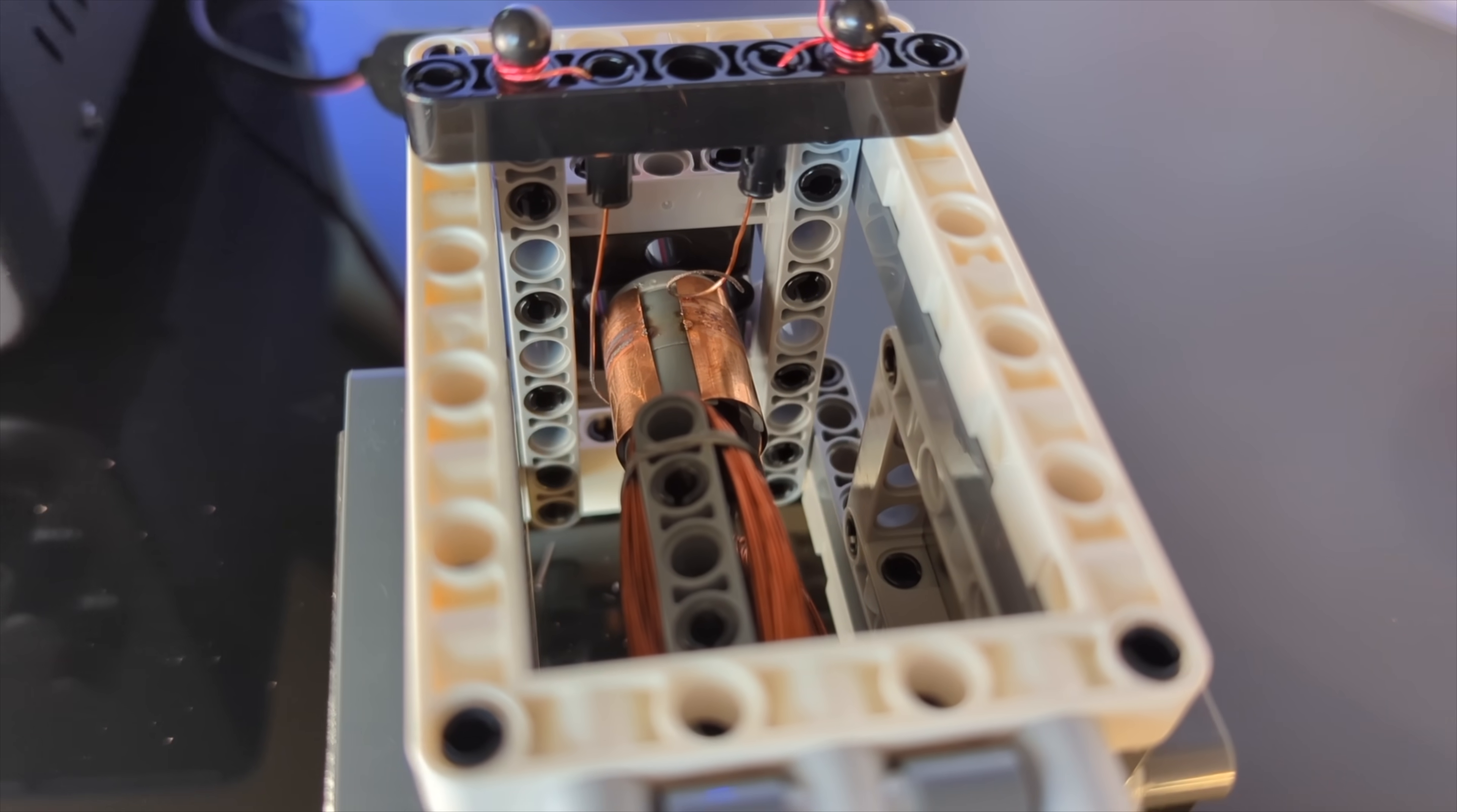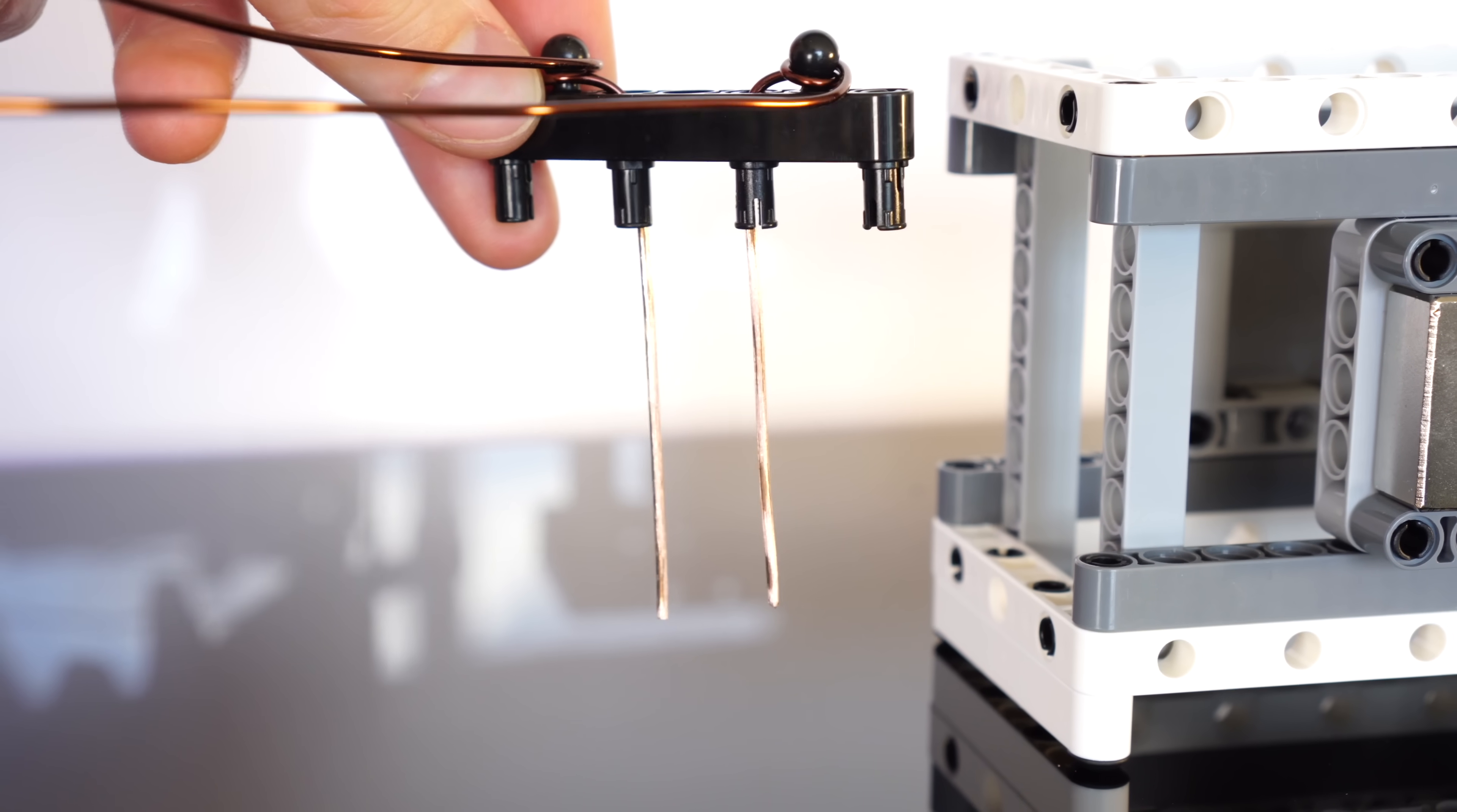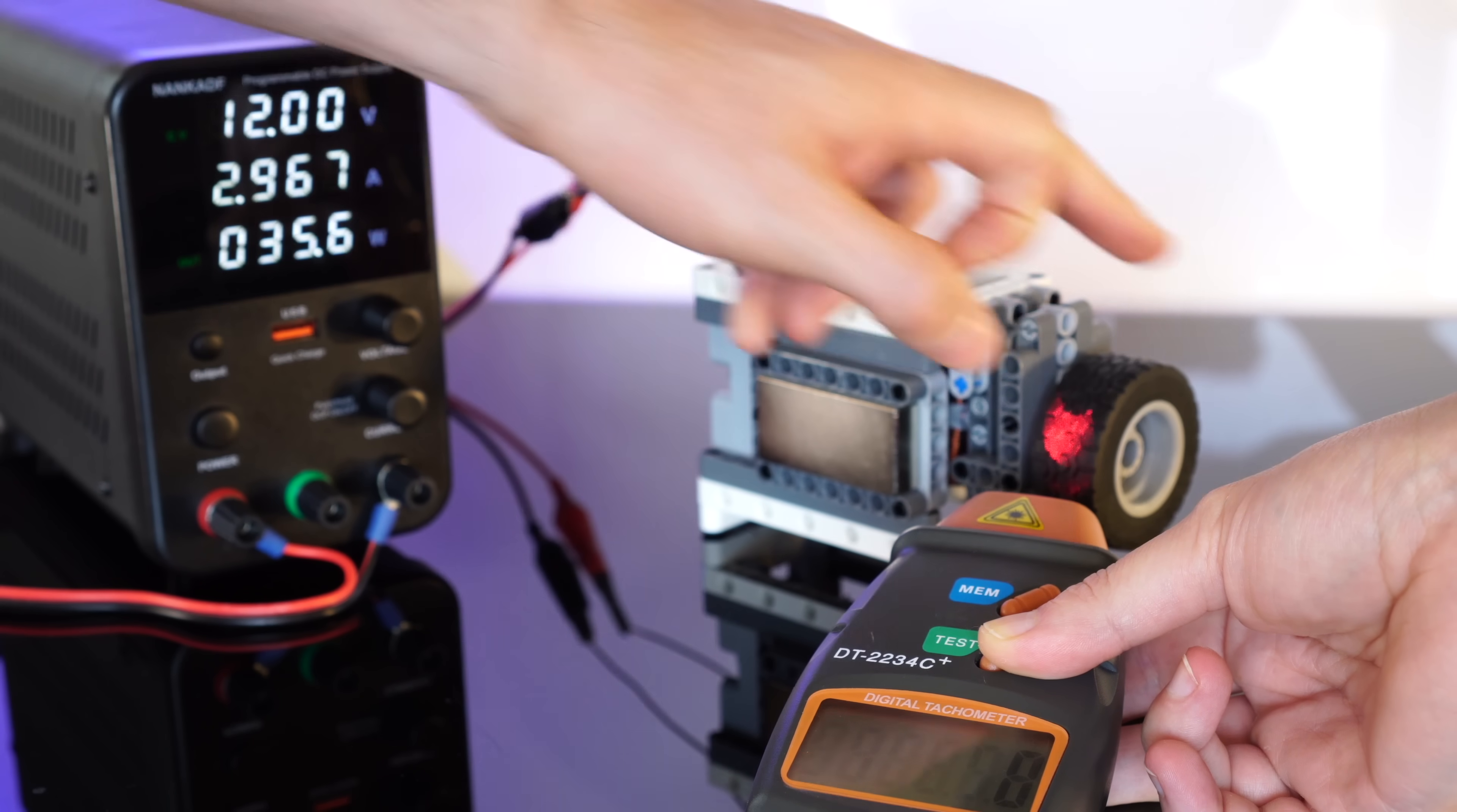Yeah those contact wires got toasted. But our copper pads still actually look great. Only some minor scarring. Now this time I'm going to use some much thicker wires for our contact points. These guys can definitely manage the current. Okay let's give this a whirl.